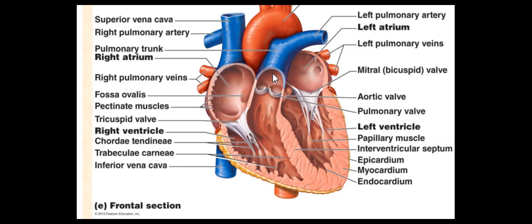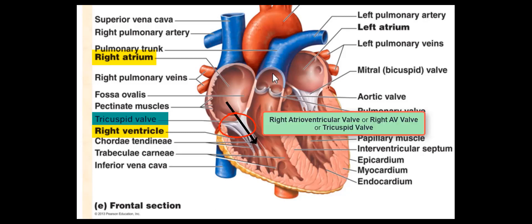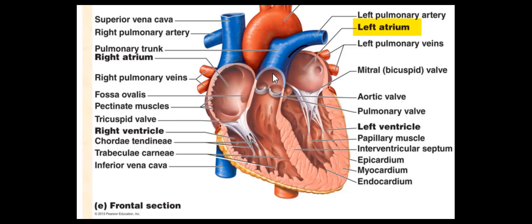Blood from the right atrium drains into the right ventricle. However, it needs to pass through the first valve of the heart, called the right atrioventricular valve, or simply the right AV valve, or the tricuspid valve. We will discuss this valve, as well as the other three valves, later.